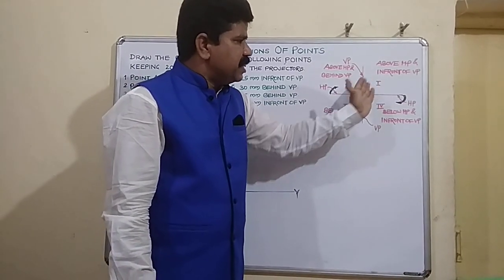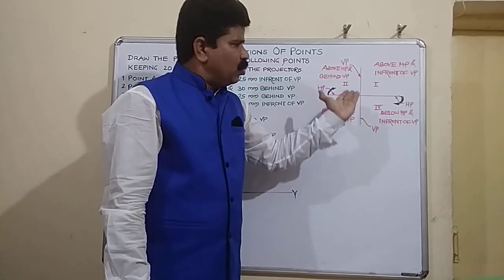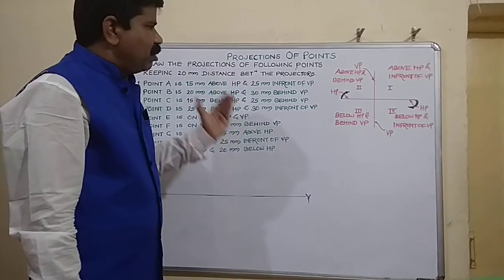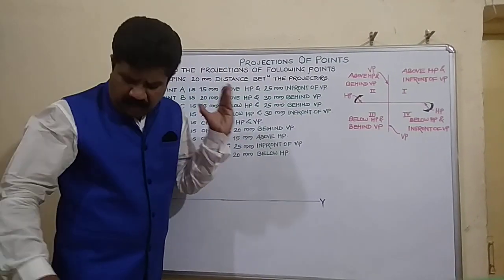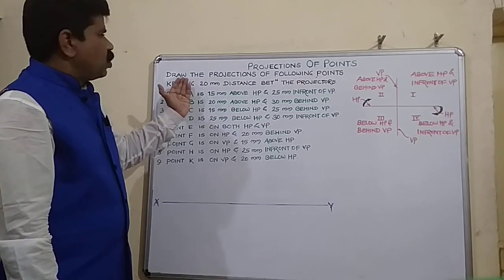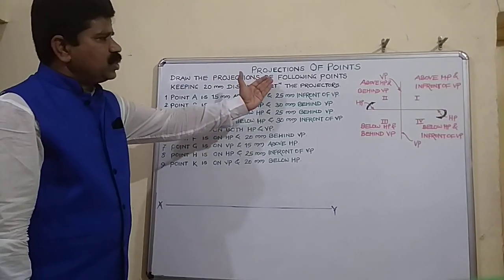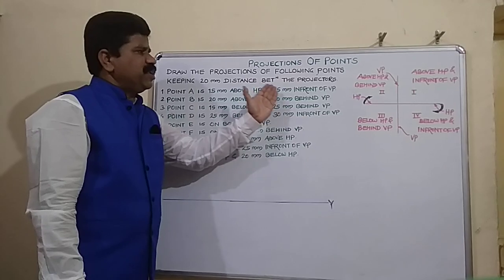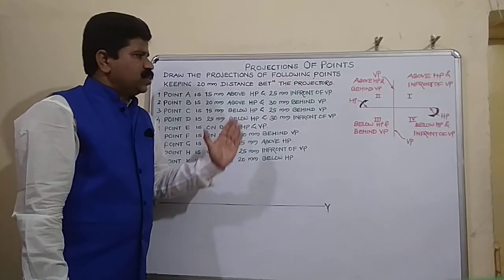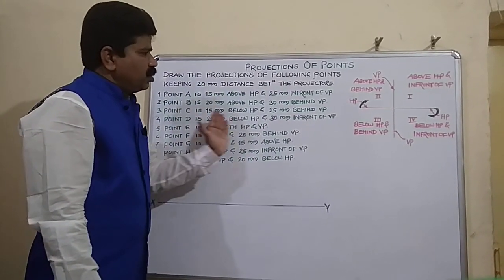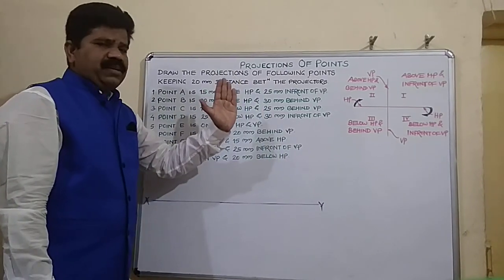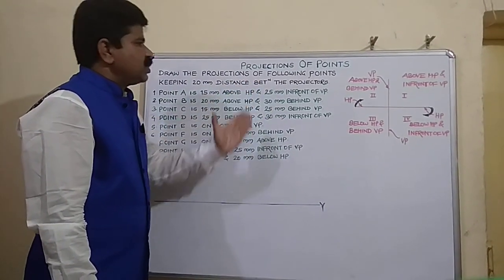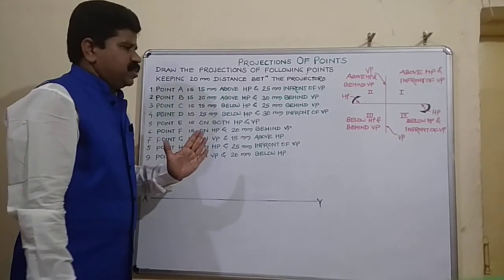Now one by one we will see the details of each quadrant with the help of some numerical problems written on the board. The problem states: draw the projections of the following points keeping 20 millimeter distance between the projectors. For this, we will draw one common XY line, and on this XY line we will draw the projections of the given points.